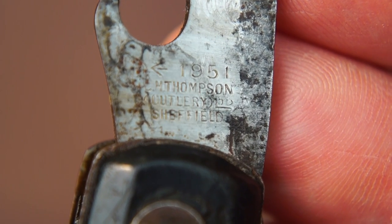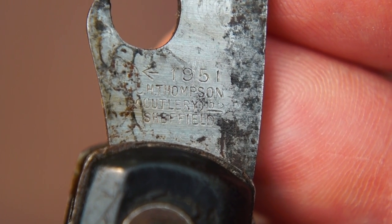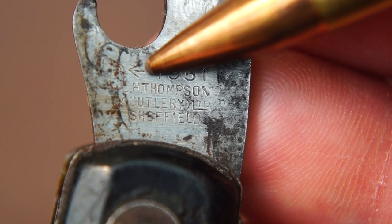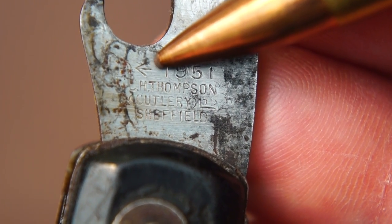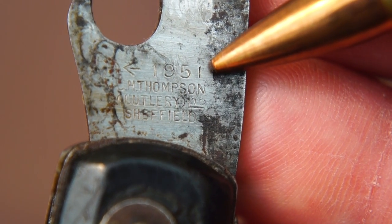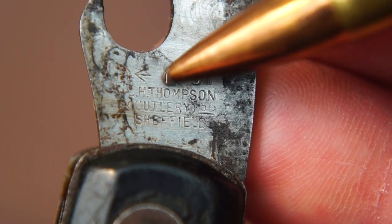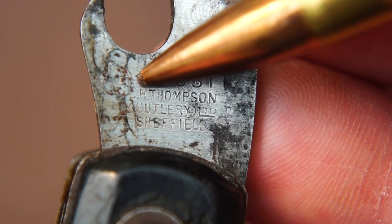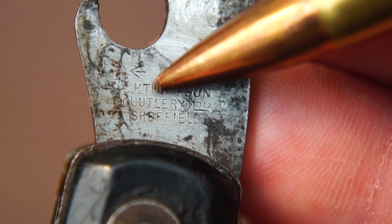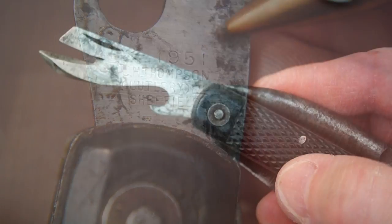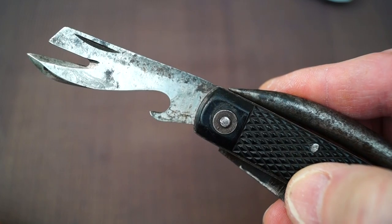And of course it snaps home with some authority too. Looking closer at the can and bottle opener, we can see the markings. We have the government marking here, the little arrow. 1951, which I would imagine is the date of manufacture. The manufacturer, it looks to me like CH Thompson Cutlery Limited of Sheffield.